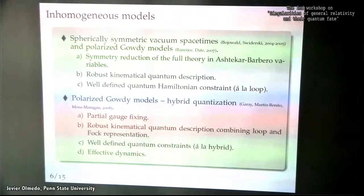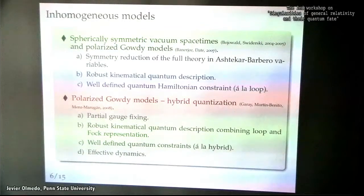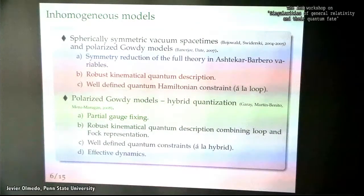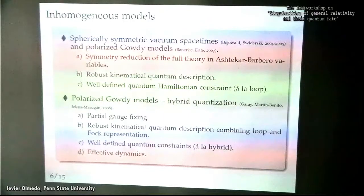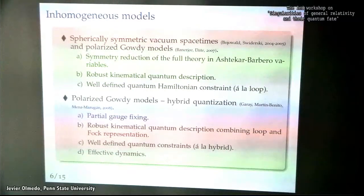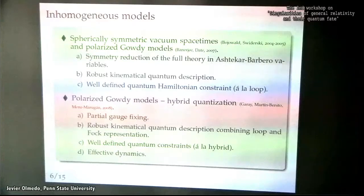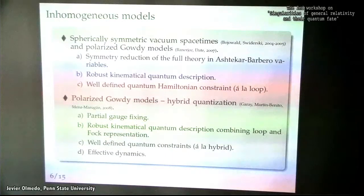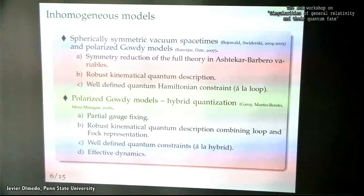There was a proposal several years ago on how to reduce the classical theory in Ashtekar-Barbero variables — how to build a robust kinematical Hilbert space well-adapted to these symmetry-reduced models, and also how to build a Hamiltonian constraint following the ideas of the full loop quantum gravity theory. This quantum Hamiltonian constraint has a well-defined action on the kinematical Hilbert space, but we don't know much about whether the constraint algebra at the quantum level is consistent, whether we can find solutions, so the quantization is still formal in some sense.